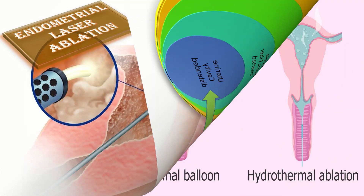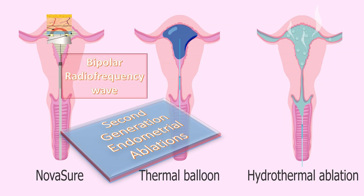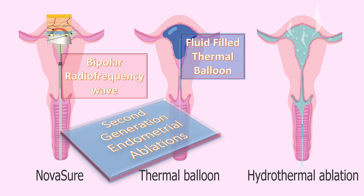The second-generation endometrial ablations include: first, NovaSure, which uses bipolar radiofrequency; second, ThermaChoice, which uses fluid-filled thermal balloons; and third, hydrothermal ablation, in which heated saline is used for the ablation.